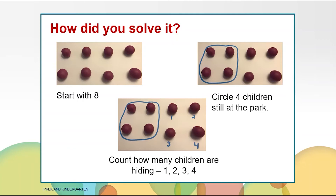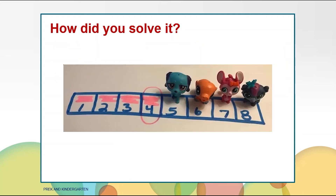Eight minus four equals four. Maybe you made a number track from one to eight because there were eight children playing at the brook. Then, colored the numbers one through four for the four children that were still playing at the brook, and then put a counter down for each number up to eight. There were four children hiding in the bushes.